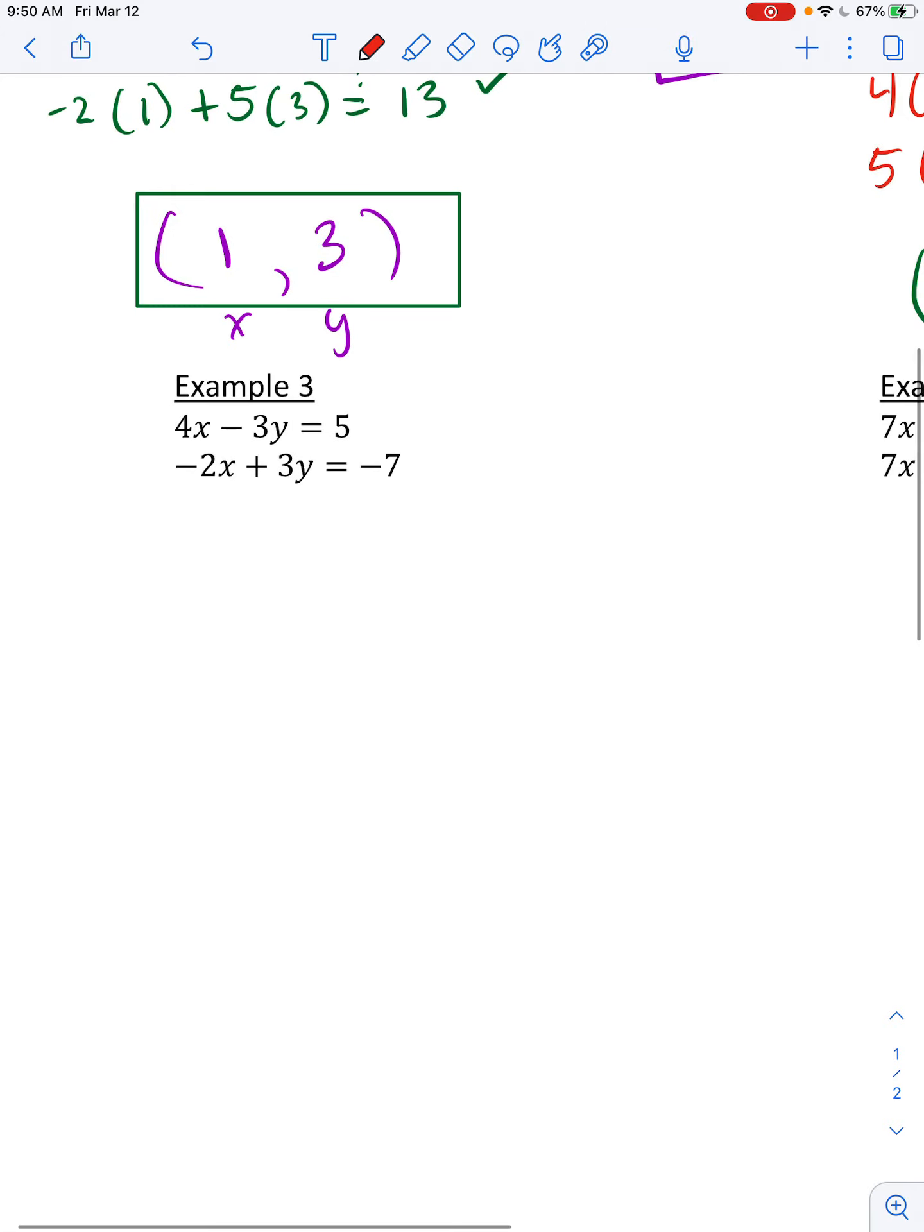All right. A couple more opportunities to practice. Let's take a look at this one. The easiest partners to match up here will be the y's because you can see that they already will eliminate. I have a negative 3y and a positive 3y. Those will cancel out or eliminate. So everything else just combines - a positive 4x and a negative 2x makes 2x. A positive 5 and a negative 7 makes negative 2.